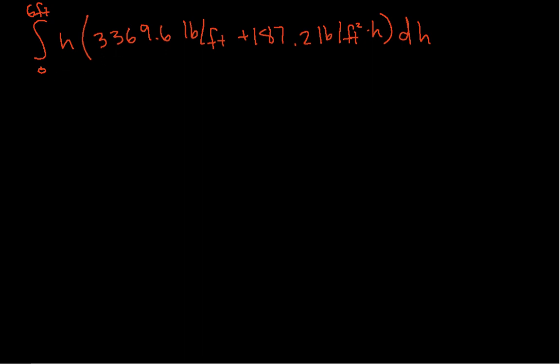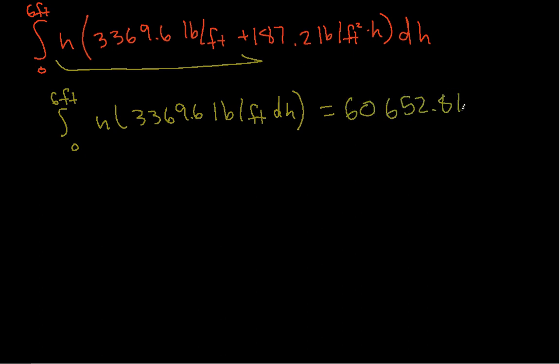So now I can break this into two terms. I have H times this guy. So I'm going to have the integral from 0 to 6 feet of H times this constant. And when I work that out, I get that this is 60,652.8 foot pounds.